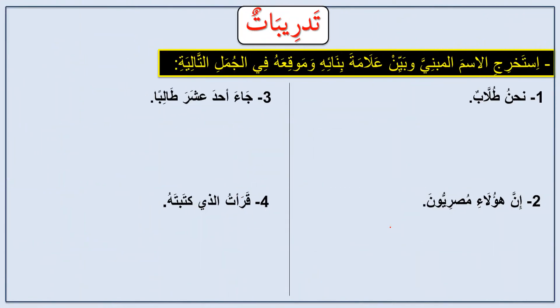Now let's see how to make i'rab for mabni nouns. The question says: istakhrij al-ism al-mabni, wa-bayin 'alamata bina'ihi wa-mawqi'ahu fi al-jumla — extract the ism mabni, state its bina' marker, and its position in the sentence. For example, in the first sentence, the ism mabni is a pronoun. It's mabni 'ala al-dhamm, and its position in the sentence is mubtada'. So we say: ism mabni 'ala al-dhamm, fi mahalli rafi' mubtada'.